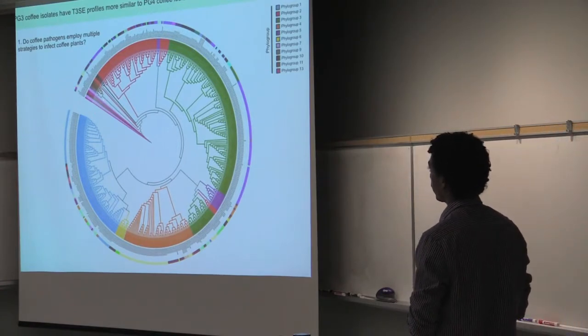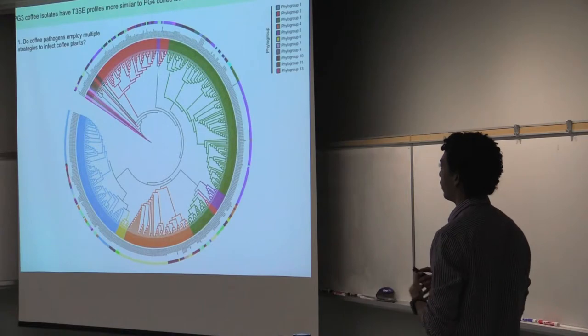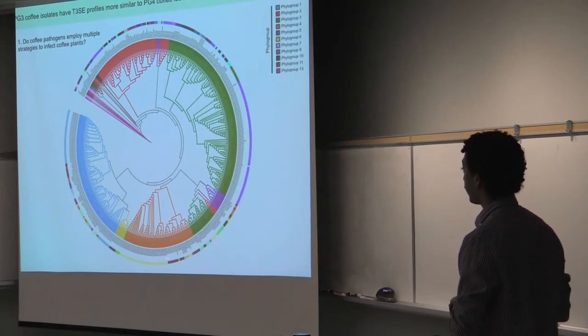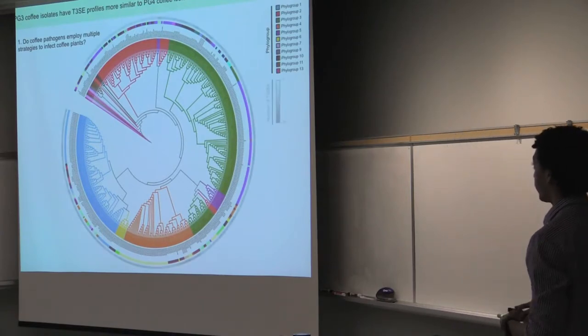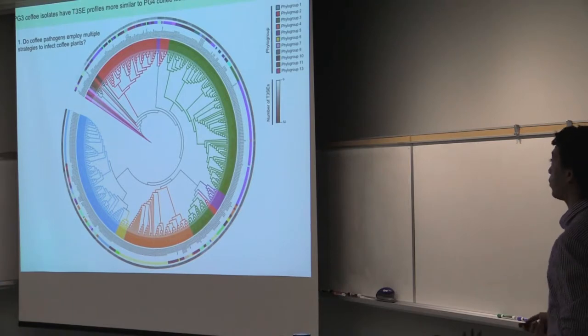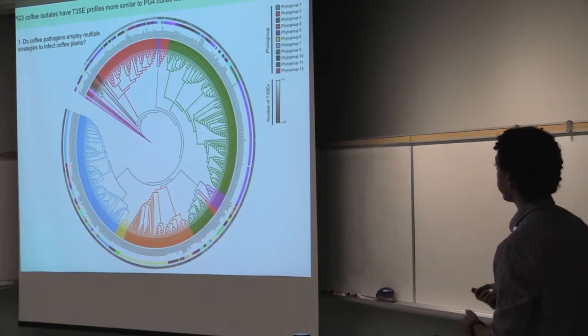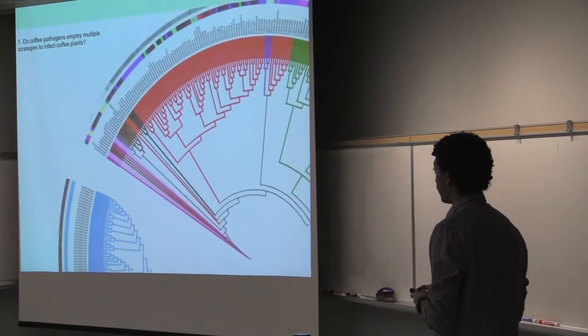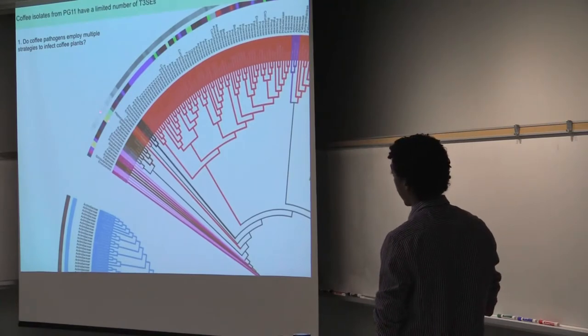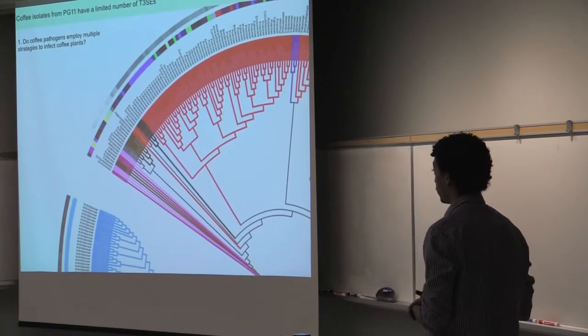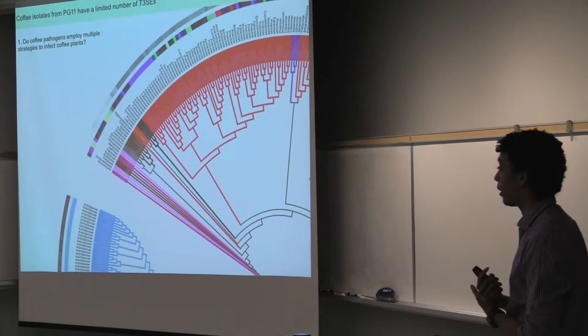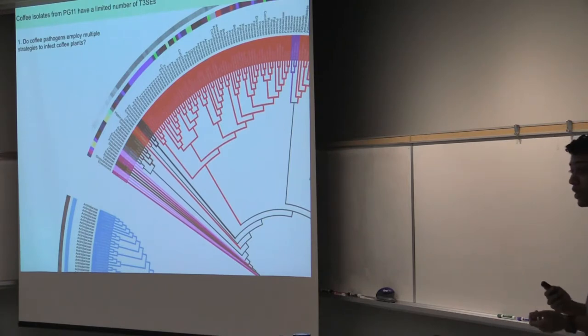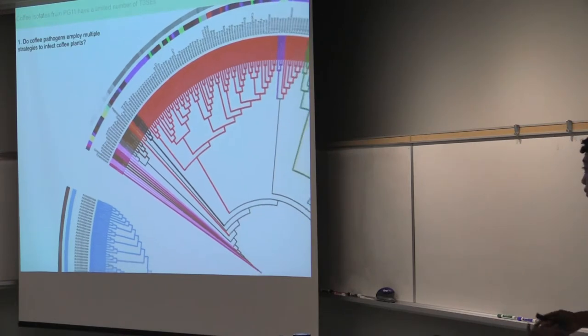But in contrast, we have our other group of coffee pathogens over here, they seem to have a profile very different from the ones we see over here. And in fact, when we look at the number of type 3 effectors that each one of these isolates have, we see that these isolates hardly have any effectors at all, which would suggest they then infect coffee plants using some other strategy that does not make use of type 3 effectors.